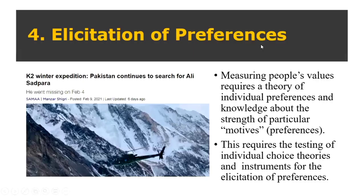Next is understanding how much value people place on different preferences. For example, consider the news of three missing mountaineers trying to summit K2 in winter without oxygen. A rescue operation using satellite support and helicopters is being carried out. However, the question is: how long should this operation continue? What should be the maximum limit of expenditure on such operations? This matters because we are in a resource-constrained world — spending more on a rescue operation may result in fewer resources for hospitals across the country. Therefore, we should try to understand the preference and value of each such action. This is where experimental economics helps us.